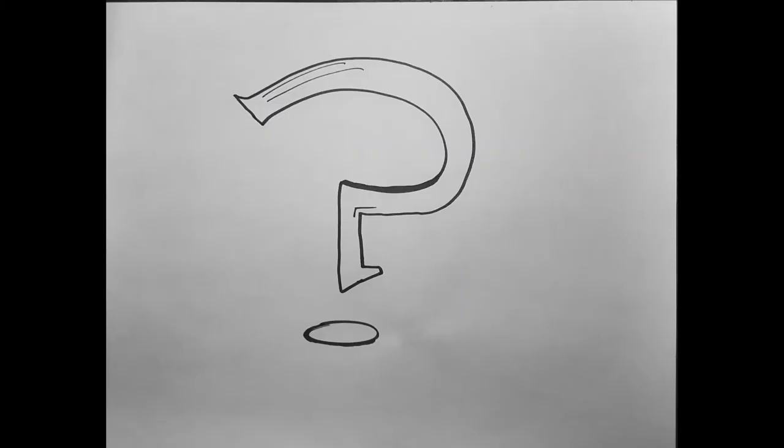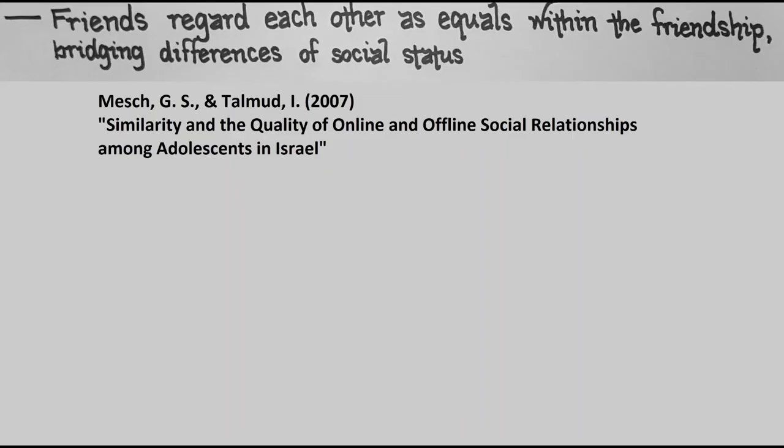Do friends online regard each other as equals as in-person friends would? According to a study done in 2007 comparing Israeli teens' similarity to their friends and how strong they judged that bond to be, friends made online may be less likely to be of the same age, income status, or gender than the friends they made at school. But the online friends were closest when they shared city of residence and gender.